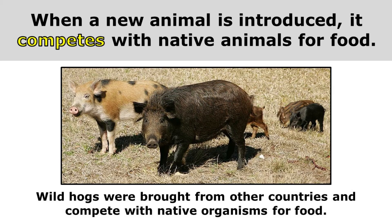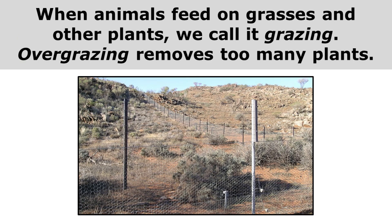When a new animal is introduced, it competes with native animals for food. Wild hogs are a big problem in Texas. Wild hogs were brought from other countries and compete with native organisms for food. When animals feed on grasses and other plants, we call it grazing.